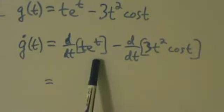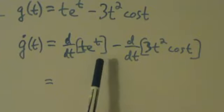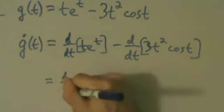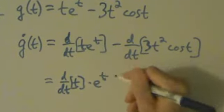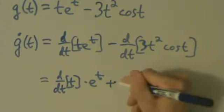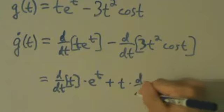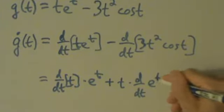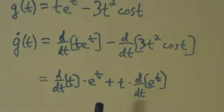So here we have t times e to the t. The product rule tells us that's going to be the derivative of the first thing, which is d/dt of just t, times just the second thing, and then plus just the first thing times the derivative of the second thing. So this comes from the first term.